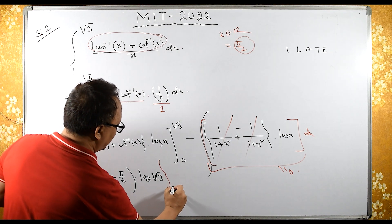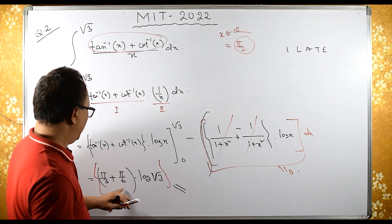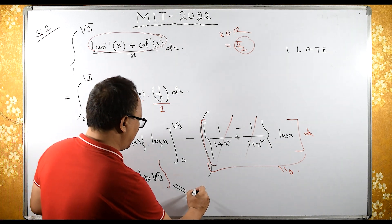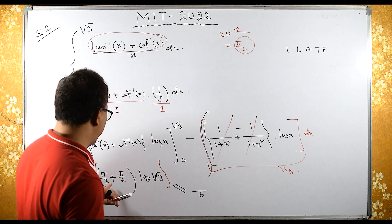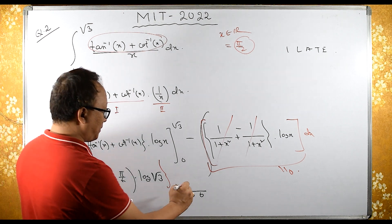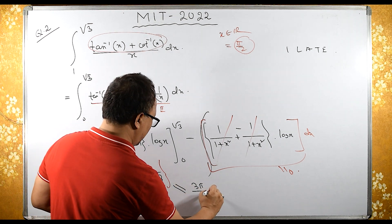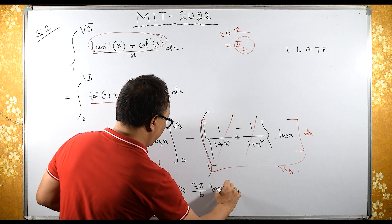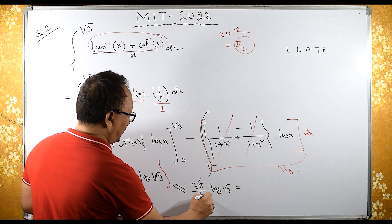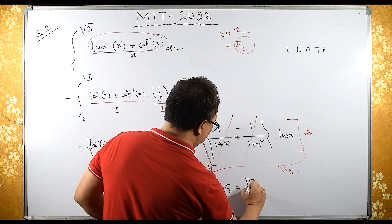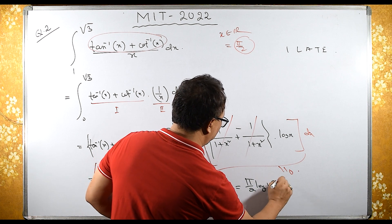Therefore, if I take LCM, this becomes 6, and 2 pi plus pi plus pi means 3 pi, times log of root 3. If I cancel, this becomes pi by 2 log of root 3.